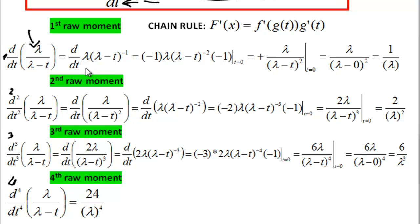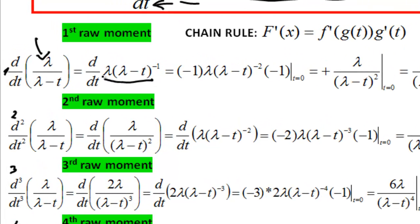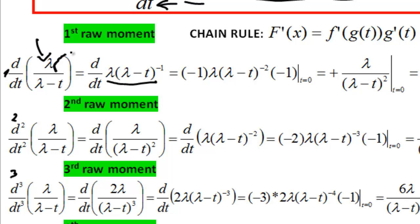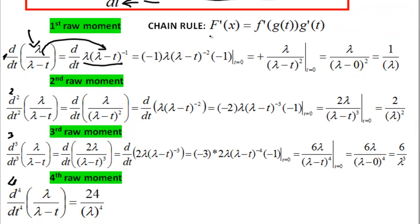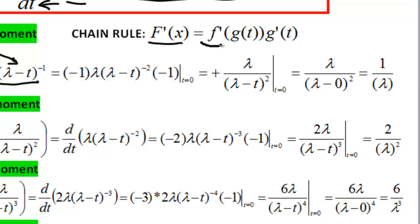Here we've got d over dt of this function here, which is our moment generating function just written in a different format. In these examples we'll use the chain rule quite heavily. As a reminder, if you want to differentiate a composite function f prime of x,